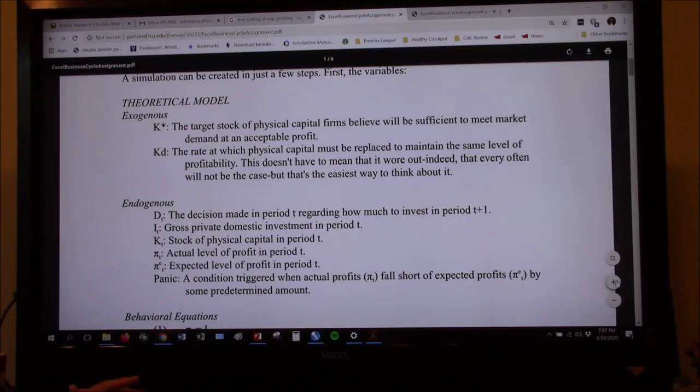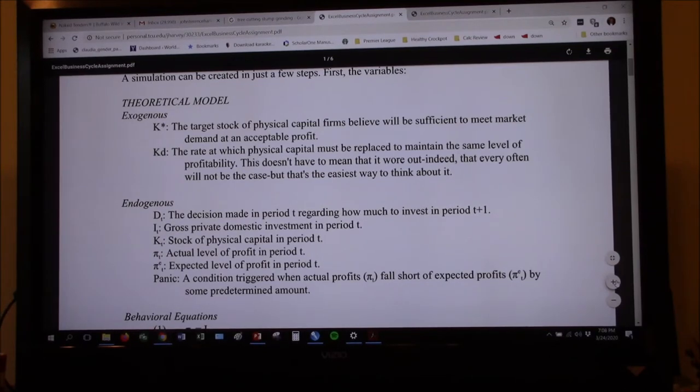D sub T is going to be the decision. This is very Kalecki in here because Kalecki made a big deal out of separating the decision to invest and the actual investment. So, for example, you might decide in January, hey, let's build a new restaurant, but you might not start till March or April. So there's a gap between the decision and the actual starting to build it. And then there's a gap between starting to build it and it actually being finished. So Kalecki made a big deal out of that when he was explaining the business cycle. We're going to make a little deal out of it here.